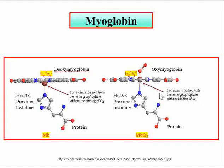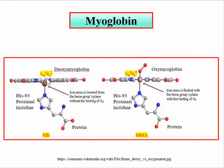The deoxymyoglobin and deoxyhemoglobin forms are almost similar, but the key difference is that hemoglobin has four subunits and four heme groups, while myoglobin has one subunit. So myoglobin is a monomeric form while hemoglobin is a tetrameric form.